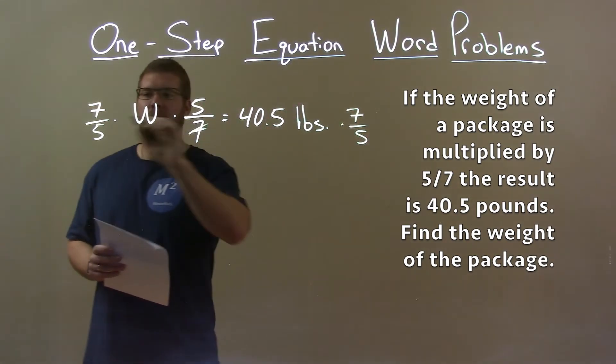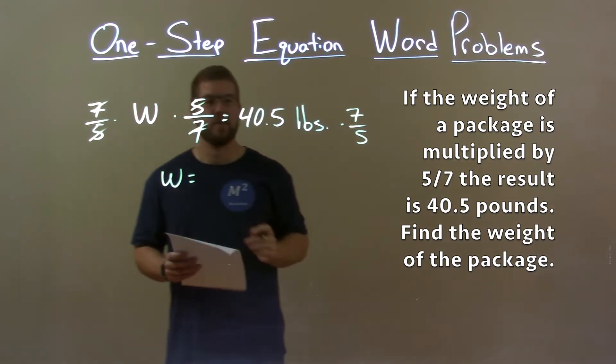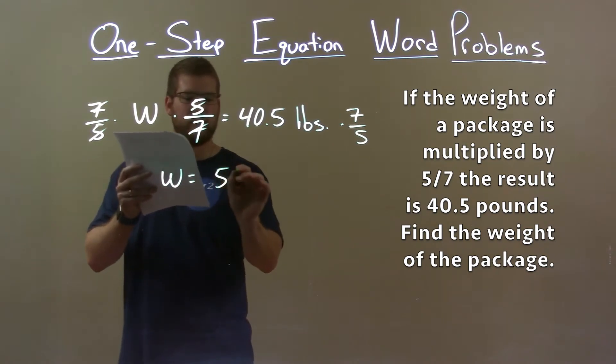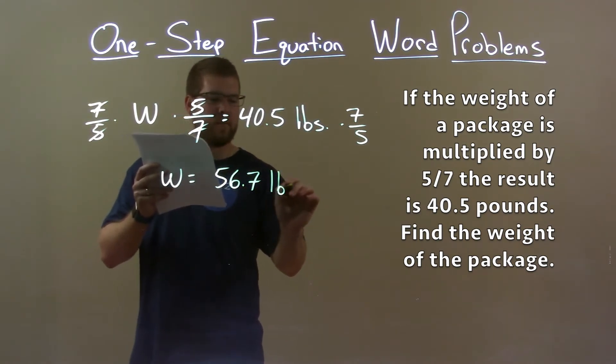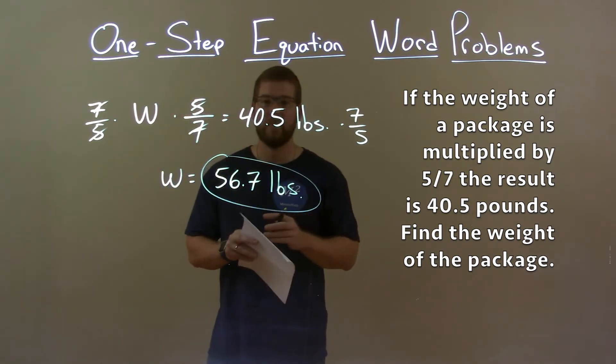In doing so, the sevens cancel, the fives cancel, and we're left with w, the weight of the package by itself. Now, 40 pounds times seven-fifths comes out to be 56.7 pounds. And so, there we have our final answer, 56.7 pounds.